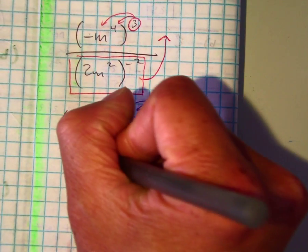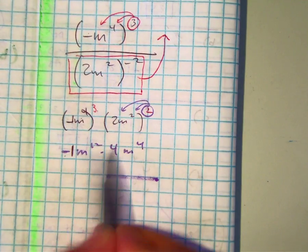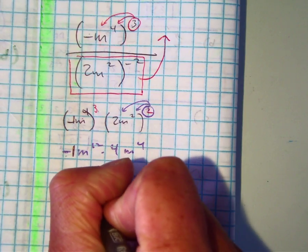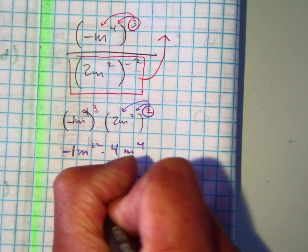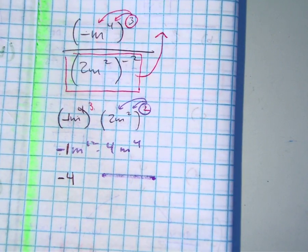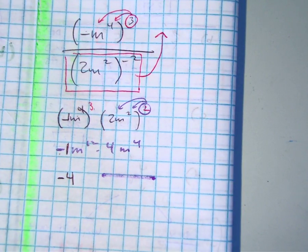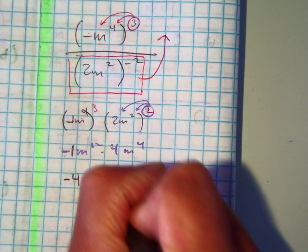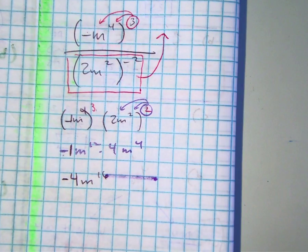This is a constant like a negative 1, so negative 1 times 4 is negative 4, and m to the 12th times m to the 4th is m to the 16th, and that's our answer.